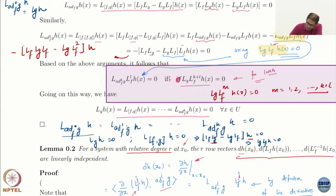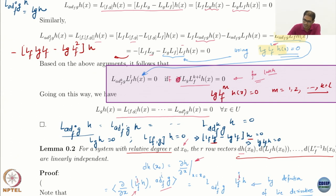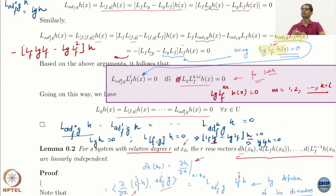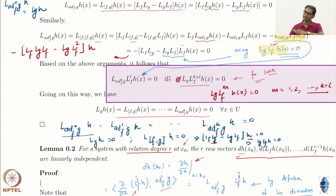Using this idea, we can prove that Lg h = 0, L_{ad_f g} h = 0, all the way to L_{ad_f^k g} h = 0. You can do the same thing again and again — take another derivative, take ad_f³ g, ad_f⁴ g — you can do this all the way.